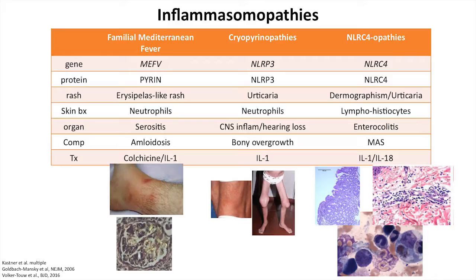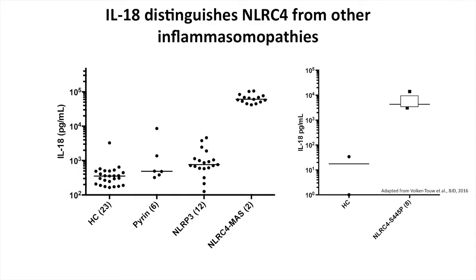In the NLRC4-opathies, IL-18 might be at least one target. They all induce the same inflammasome — the same inflammasome that can cleave IL-1 and IL-18. But we don't see IL-18 equally across the inflammasomopathies. In FMF, it's marginally elevated. In the cryopyrinopathies, a little more so. But in NLRC4 patients, it's stratospherically elevated — even in NLRC4 patients that don't have MAS. It's a different scale, another order of magnitude above what we see in other inflammasome-activating conditions.